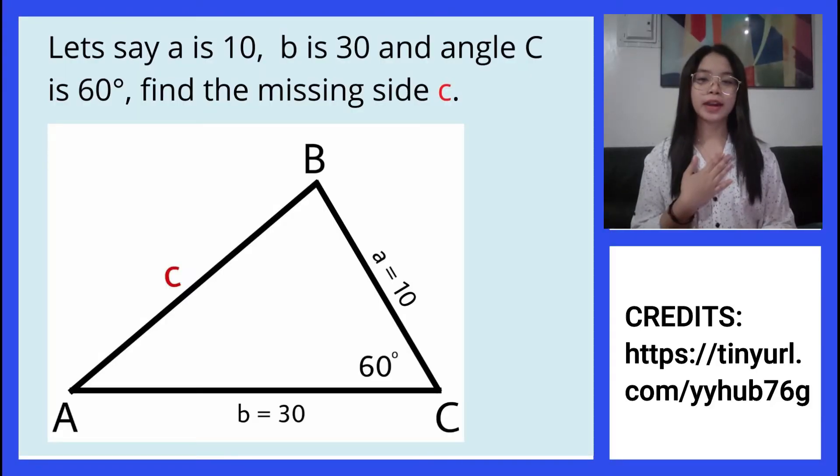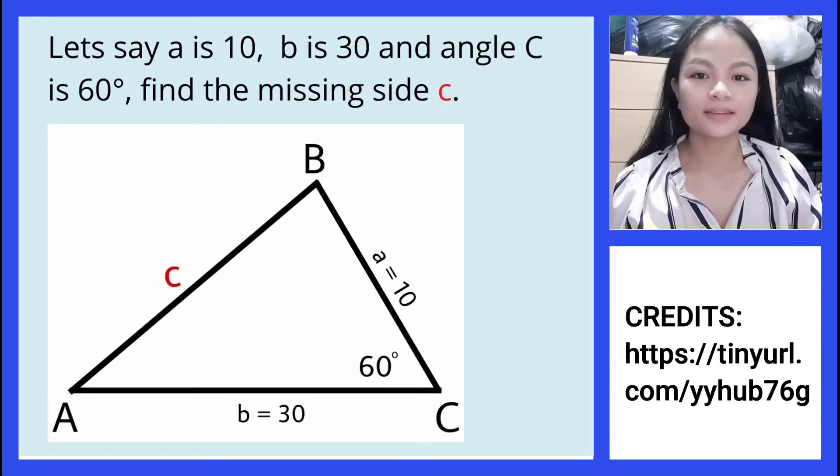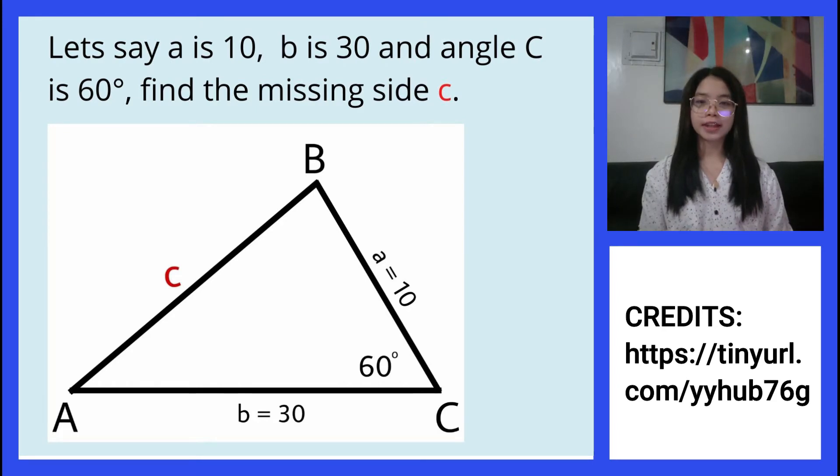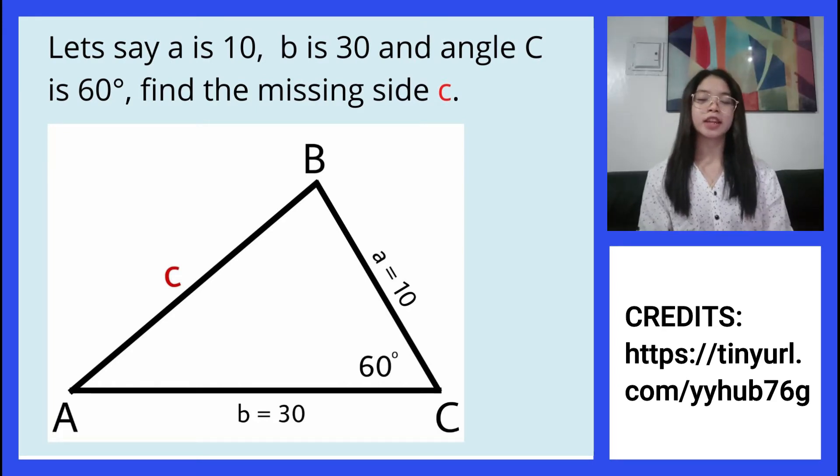Hello everyone, I am Camomile and I am Edin. This is an example of the law of cosines. Let's say side a is 10, side b is 30, and angle C is 60 degrees. So let's solve the triangle to get side c. What we have is a side angle side, or SAS triangle.